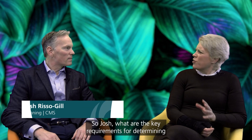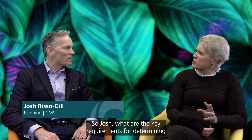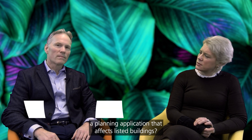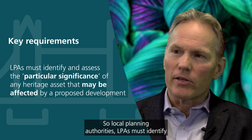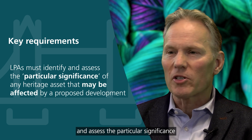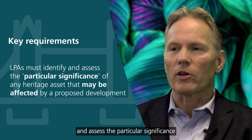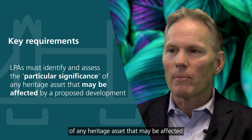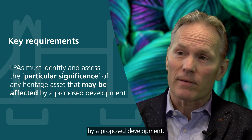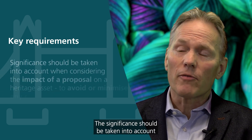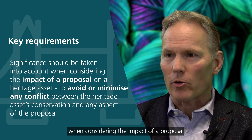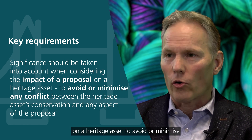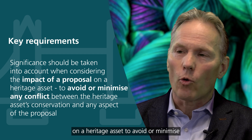So Josh, what are the key requirements for determining a planning application that affects listed buildings? Local planning authorities, LPAs, must identify and assess the particular significance of any heritage asset that may be affected by proposed development. That significance should be taken into account when considering the impact of a proposal on a heritage asset to avoid or minimize any conflict between the heritage asset's conservation and any aspect of the proposal.